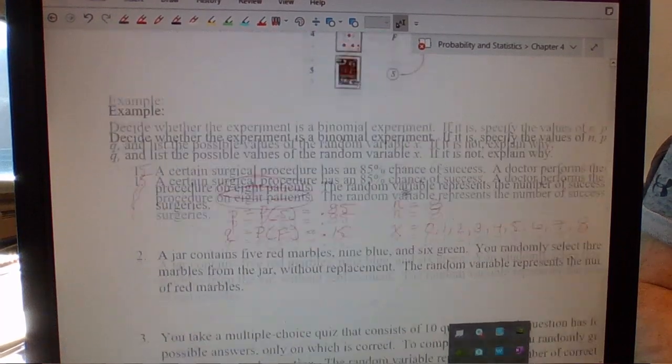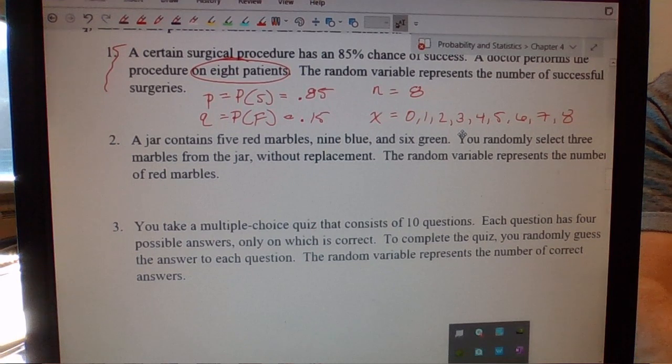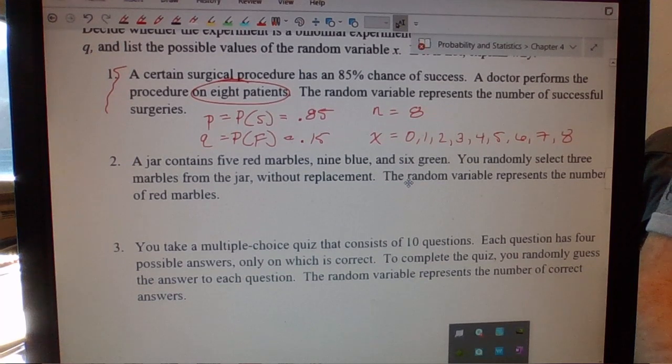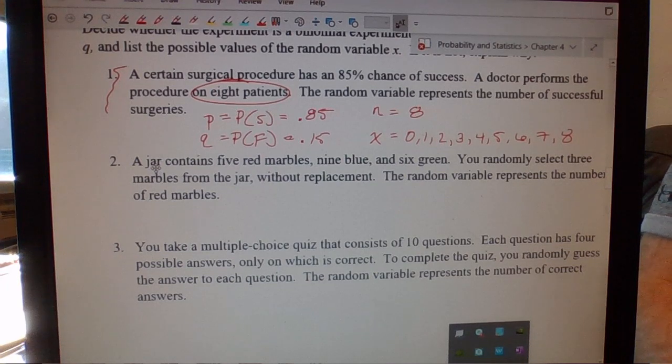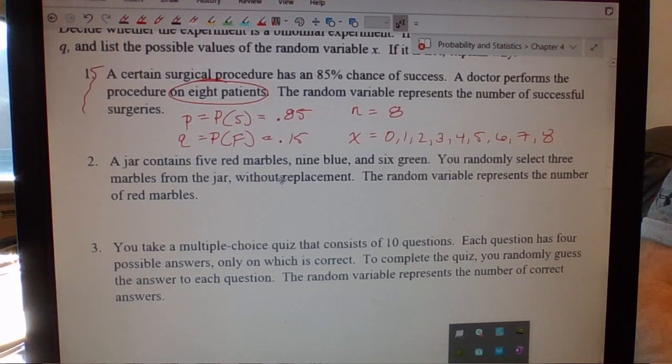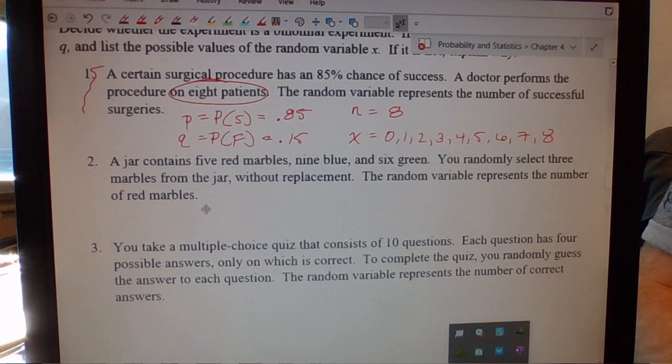If I keep the marble out, does the first choice of a red marble or not a red marble impact the next one? Yeah. So these events are not independent. Therefore, the probabilities for each trial is changing, and that contradicts what requirements we need to be a binomial distribution. So this is not a binomial distribution. So we cannot use the mean formula, standard deviation formula, that kind of stuff for this.